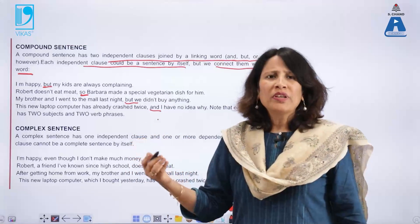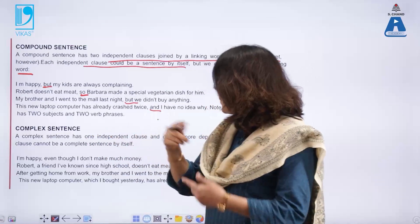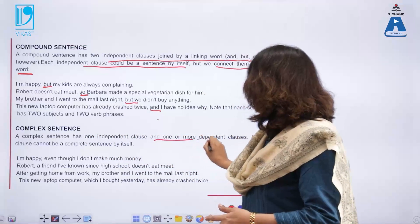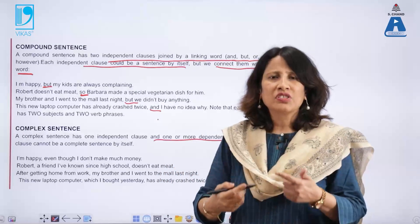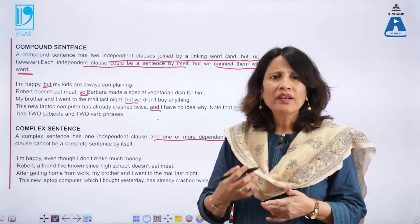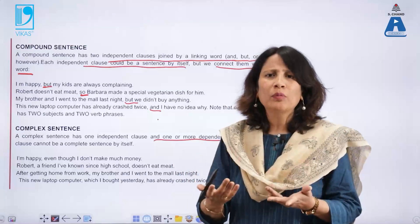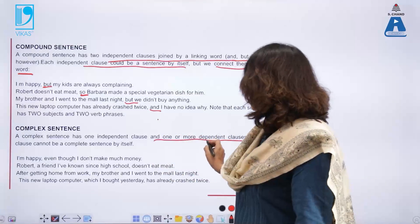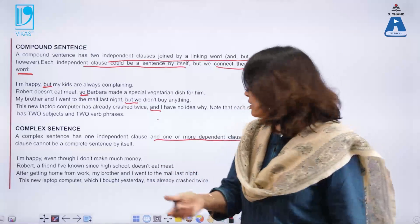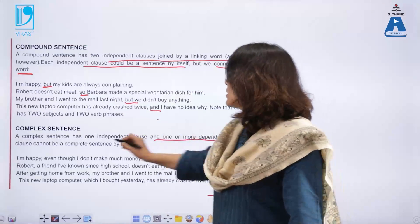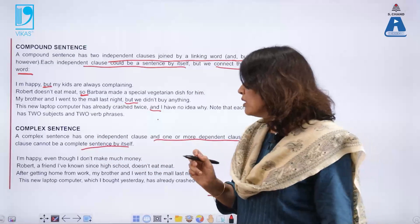A complex sentence has one independent clause and one or more dependent clauses. As the name itself suggests, independent means not dependent upon anything, while a dependent clause is one which is not independent in meaning. A dependent clause cannot be a complete sentence by itself — that's very important to remember.